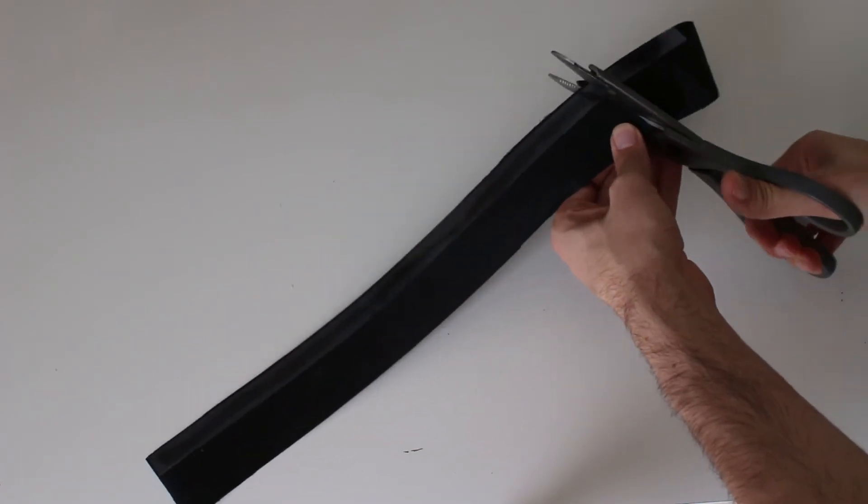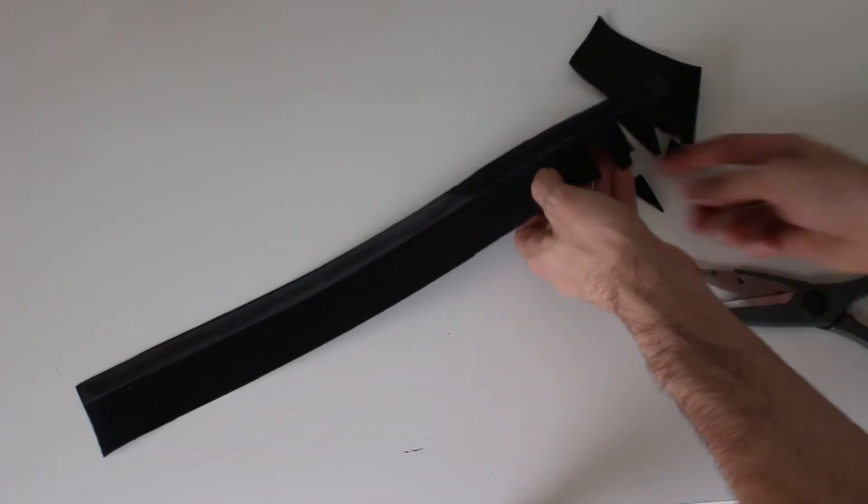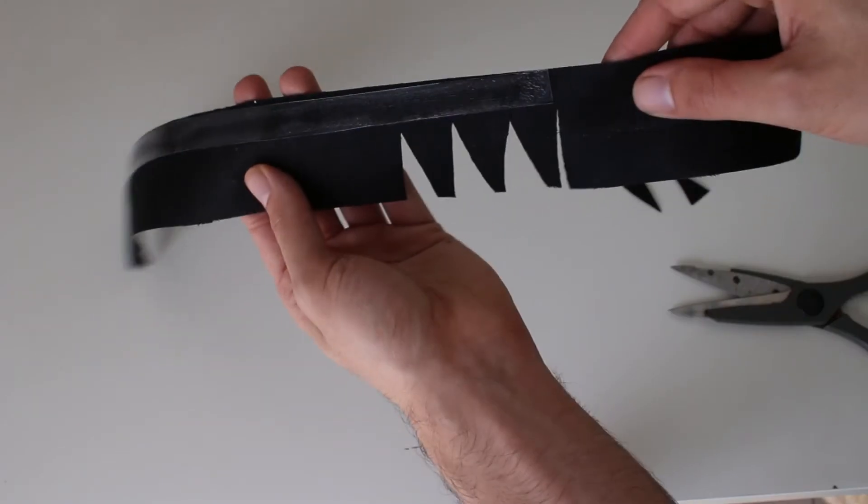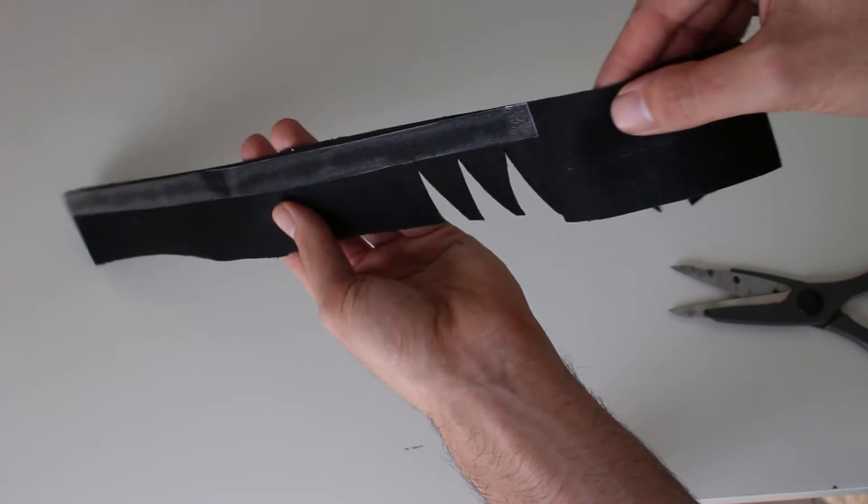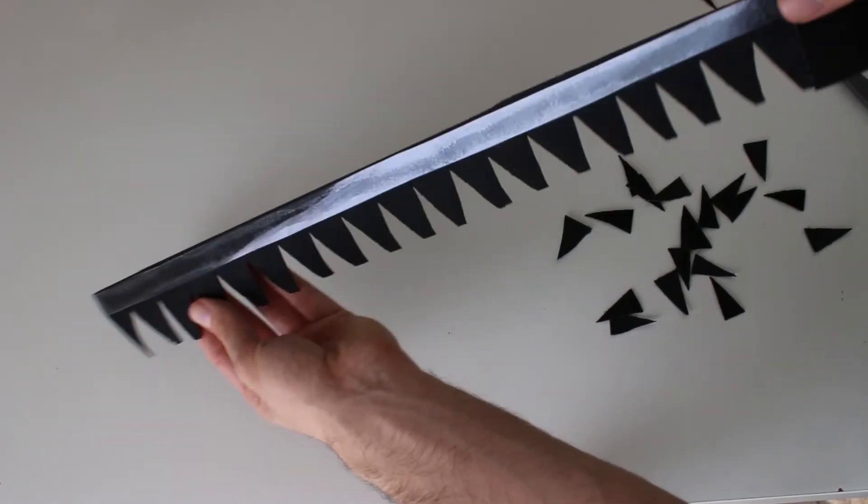After you gave it a few hours to dry, cut triangles till the end of the leather. It should look like a sword.